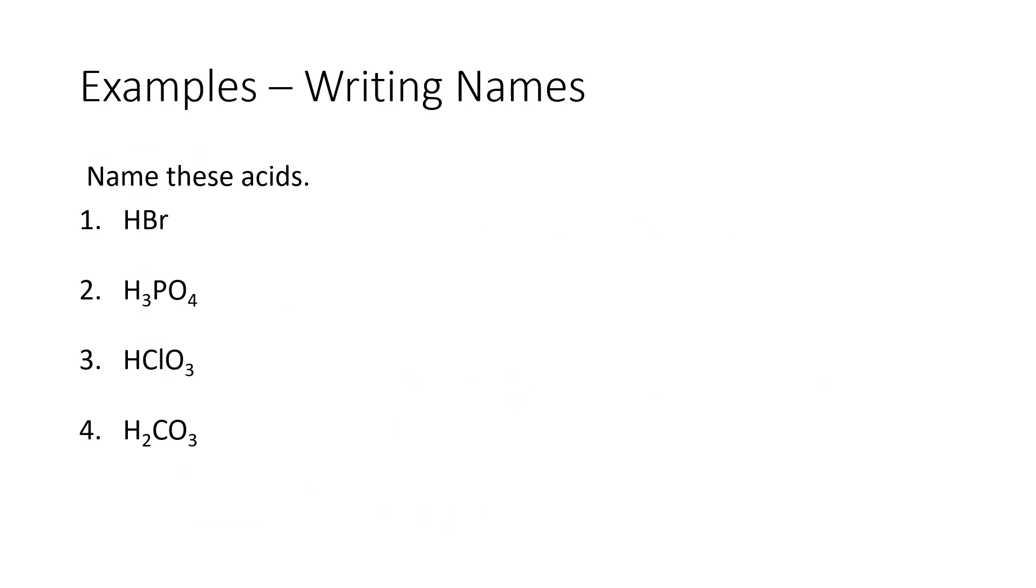So let's work a couple examples of these acids and how we would name them. These are the same acids that we wrote formulas from from their anions a couple slides back. We started with Br-, we added an H-plus to it and got HBr. This is binary, there are only two elements, so we'll start with hydro, and then bromine gets changed to brome, and then we're going to put ick on the end of that, and then acid.